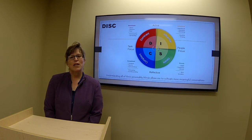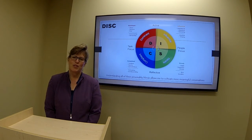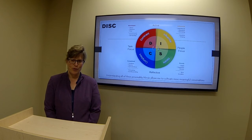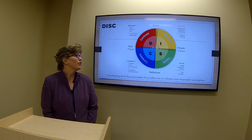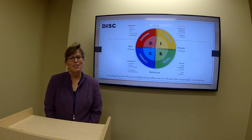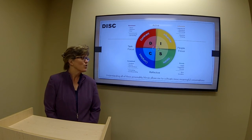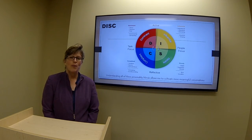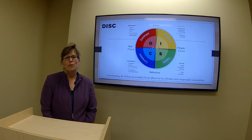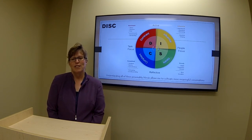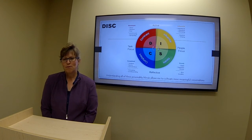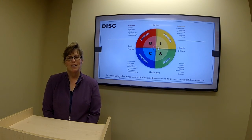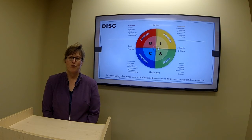The four personalities that make up the DISC model include the D, or dominant personalities, which are active and task focused. The I, or influential personalities, are active and people focused. The S, or steady personality type, which is reflective and people focused. And the C, or compliant personalities, which are reflective and task focused. Understanding these personalities and the blends they create helps me to cultivate more meaningful conversations.